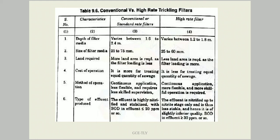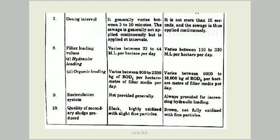The method of operation for conventional trickling filter is continuous application of water, less flexible, and requires less skilled supervision. For high rate trickling filtration, the continuous application is more flexible and requires more careful, skillful operation. The type of effluent produced is highly nitrified and stable in case of conventional trickling filter with BOD less than 20 ppm. In high rate trickling filter, the effluent is nitrified only up to the nitrite stage, is less stable, and BOD is greater than 30 ppm. Dosing interval is 3 to 10 minutes for conventional and less than 15 seconds for high rate filters.